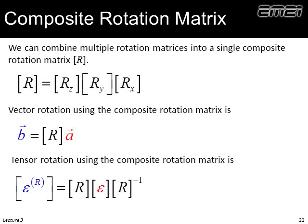For rotations about X, Y, and Z combined, we construct a composite rotation matrix by multiplying all three individual rotation matrices together. With this single matrix we can pre-multiply a vector to get the rotated result, or pre-multiply and post-divide to rotate a tensor — often the easiest approach.